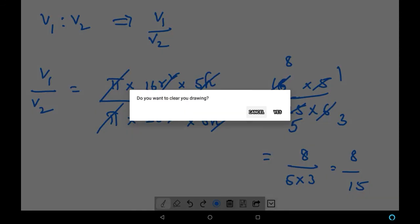Now let us equate it. That is volume 1 by volume 2 is equal to 8 by 15. So if volume 1 is to volume 2, then it will be 8 is to 15. So this is the answer. Therefore, we can conclude that volume 1 is to volume 2 is equal to 8 is to 15.